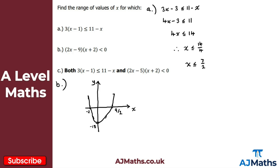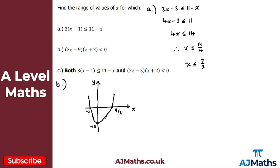We're looking for where this is less than zero — where the curve is below the x-axis. That's the region between -2 and 9/2. So the solution is -2 < x < 9/2. Note: if it were ≤ 0, we'd include the equals sign as well.